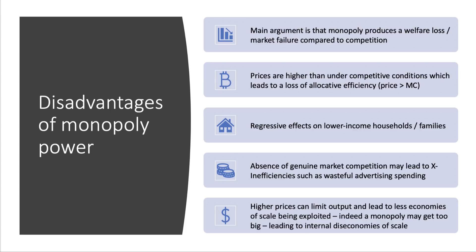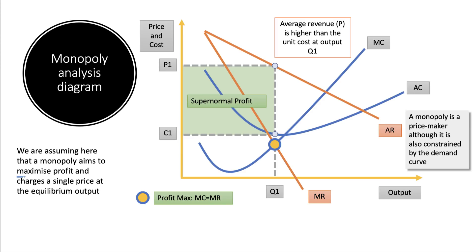Higher prices also limit final output in a market, which may cause fewer economies of scale to be exploited. Indeed, a monopoly may grow too big and lead to internal diseconomies of scale. The key point is that if a monopoly aims to maximize profit, it will tend to charge a price well above costs. In this diagram, the monopoly price is P1 and the unit cost is C1, so there is a large area of monopoly profit and the price is well above the marginal cost of production.